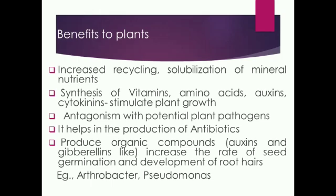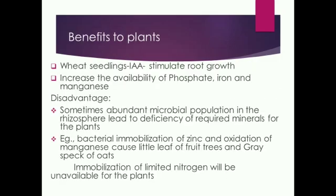To name a few examples: Arthrobacter, Pseudomonas, etc. The rhizosphere of wheat seedlings will produce indoleacetic acid, which is a plant growth hormone that stimulates the growth of the plant. It also increases the availability of phosphate due to solubilization by rhizospheric microorganisms, and makes iron and manganese available to the plant by producing iron chelating agents. Majority of the interactions in the rhizosphere mutually benefit both the plant and microbes.